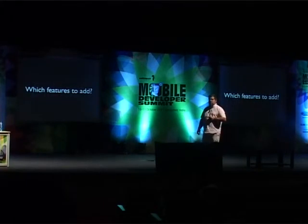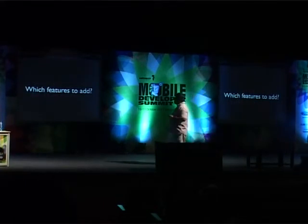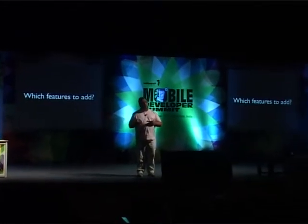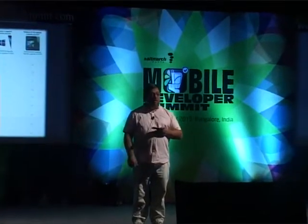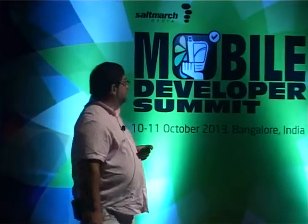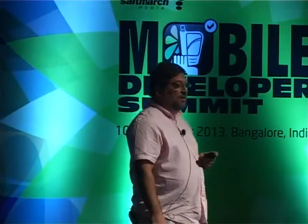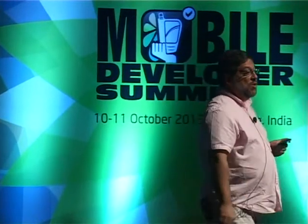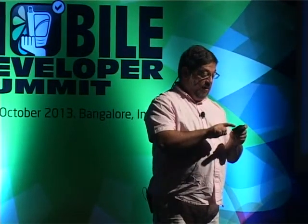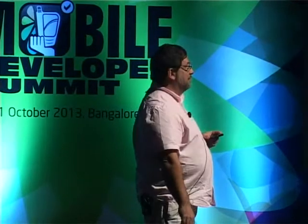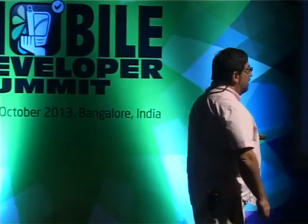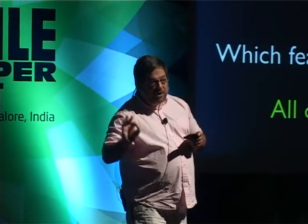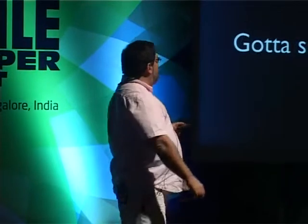As you think about what features to add to your flashlight app, all developers face this. You've got business people and marketing people, and when you ask them what features to add, they give you a list like this — with checkboxes. Their answer is they want you to add all of them. Everything that they've checked. 'I want a flashlight that can brush my teeth. I want a flashlight that can go to the store for me.' They've got to sell flashlights.